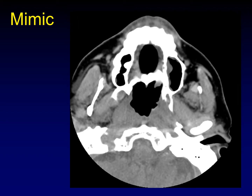Here's another mimic. This mass is filling the nasopharynx somewhat symmetrically on both sides but is pretty much confined to the nasopharynx — you might think T1 nasopharyngeal carcinoma. But this is actually inflammatory disease: Wegener's granulomatosis looking just like nasopharyngeal carcinoma.